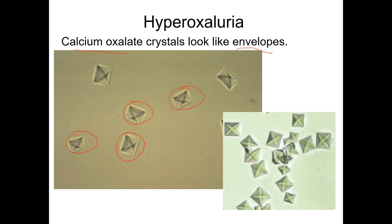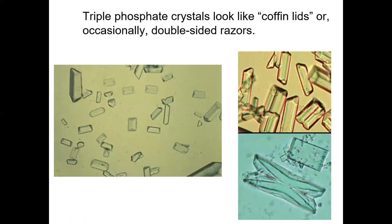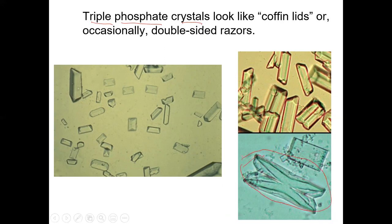These are triple phosphate crystals. They kind of look like coffins or razors — coffin blades. This is a buildup of crystals from phosphate in the urine. This one looks like a razor. An acidic pH doesn't necessarily cause triple phosphate — this is more of an alkaline problem.